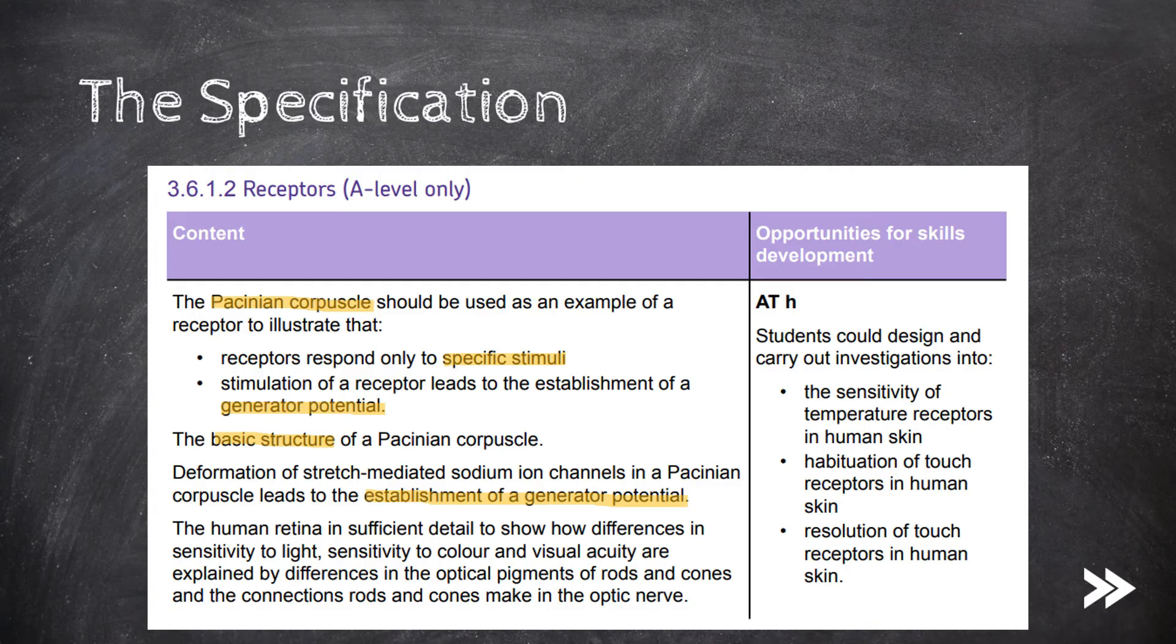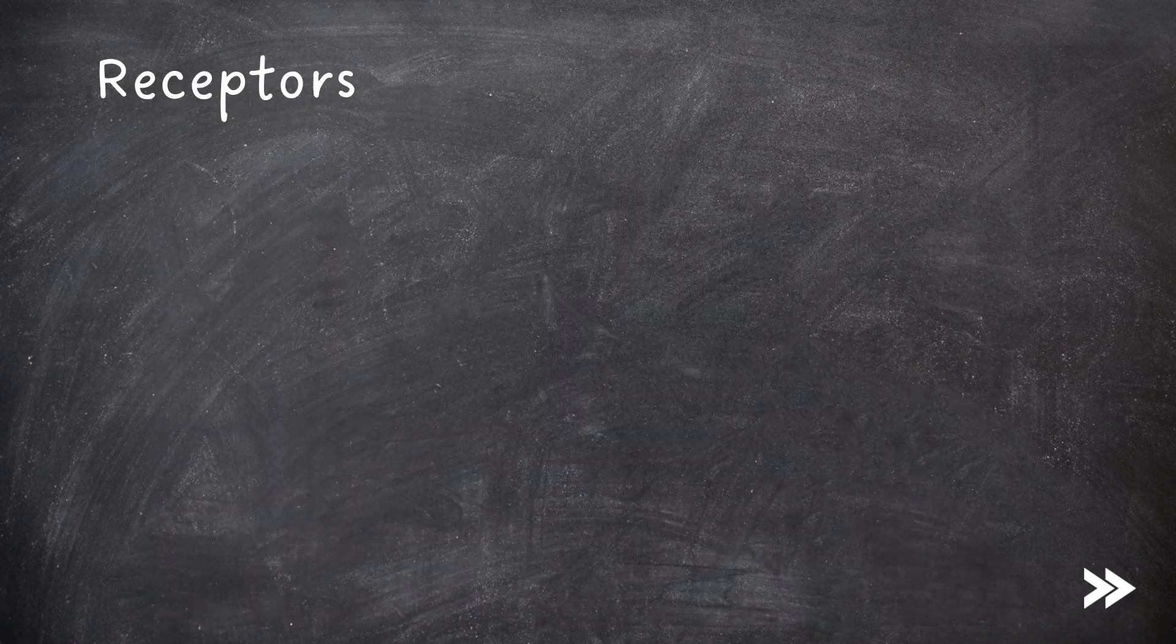Finally, we should know the human retina in sufficient detail to show how differences in sensitivity to light, sensitivity to colour, and visual acuity are explained by differences in the optical pigments of rods and cones, and the connections rods and cones make in the optic nerve. So let's make a start.